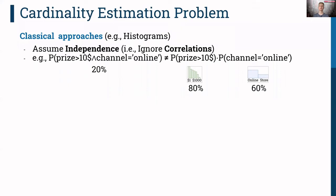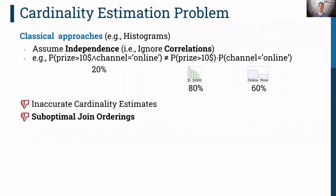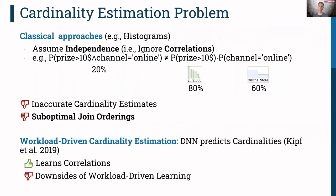The classical approach for cardinality estimation uses histograms, which assume complete independence — ignoring any correlations in your data. For instance, if you want to know the probability that a product was sold online for less than $10, you look up the marginal probabilities — 80% and 60% — multiply them, and end up with a probability that may be wrong because there are correlations: products sold online might be cheaper in general. This causes cardinality estimates to be way off, resulting in suboptimal join orderings.